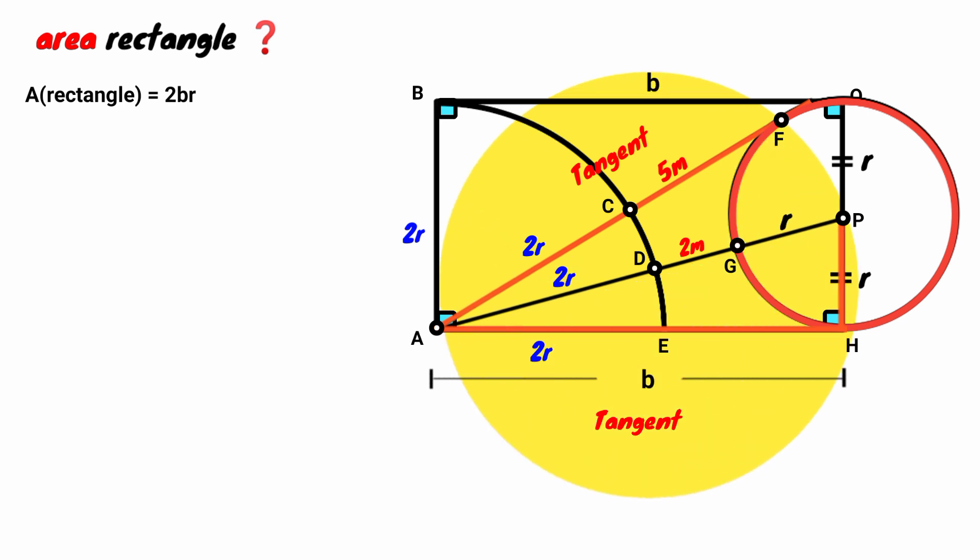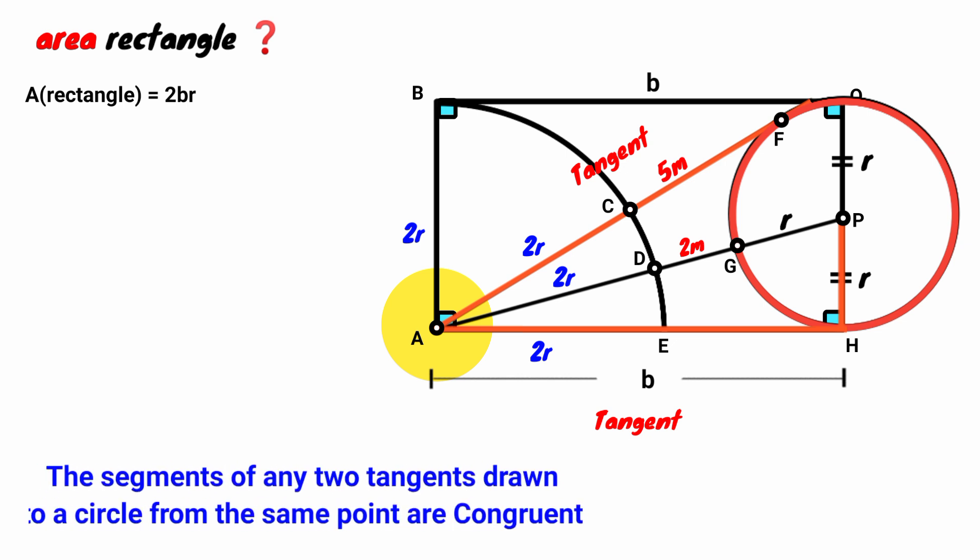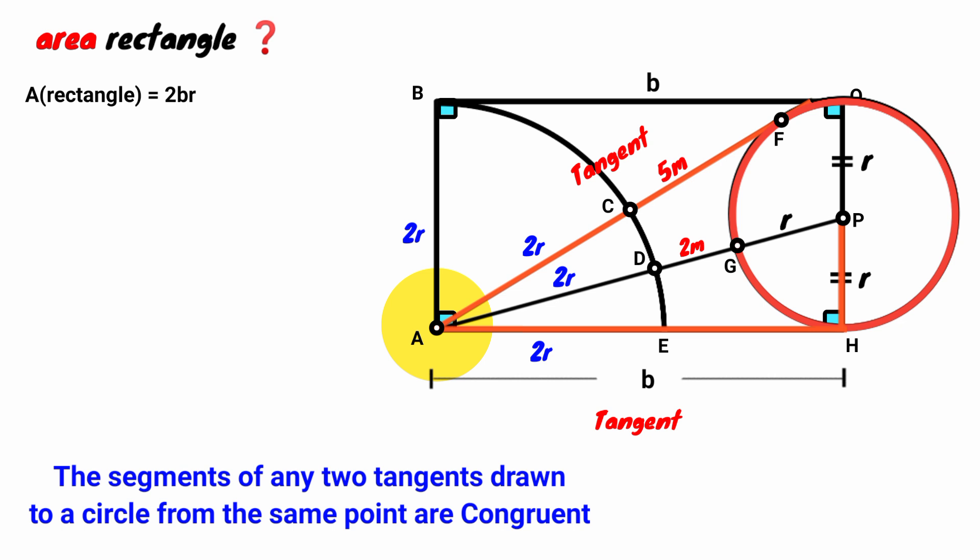The two tangents are both drawn from this point A. And from circle theory, there is a rule that if two tangents are drawn to a circle from the same external point, their segments are equal in length. That is, this segment AH and this AE are equal. So since the length of this is the sum of this 2R and this 5 meters, that of this must also be 2R plus 5 meters. But we have this part of it to be 2R. Therefore this would be 5 meters.